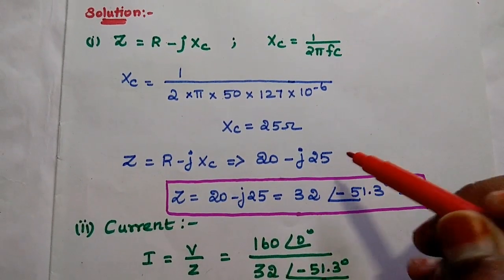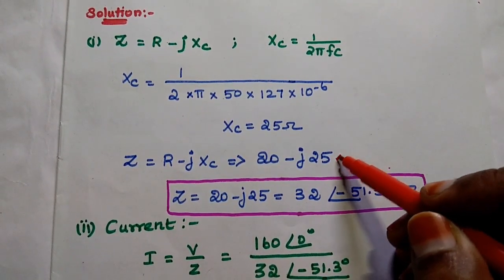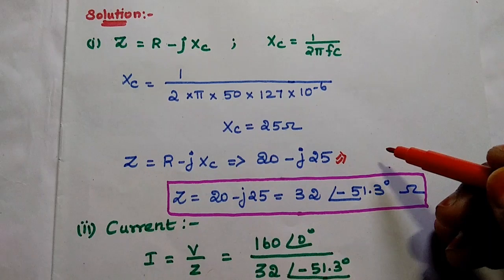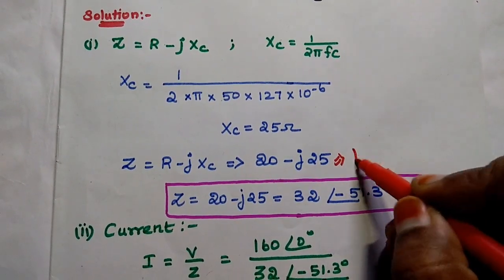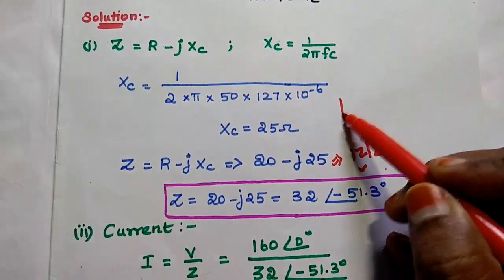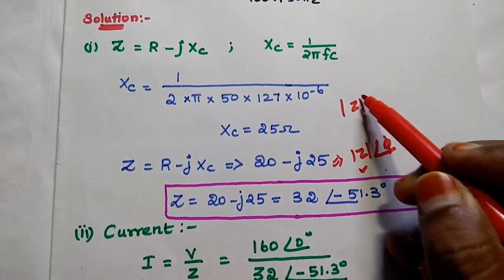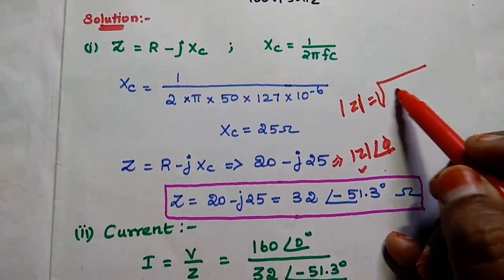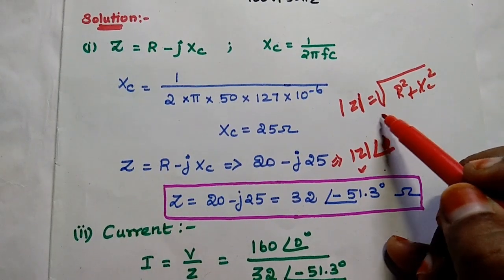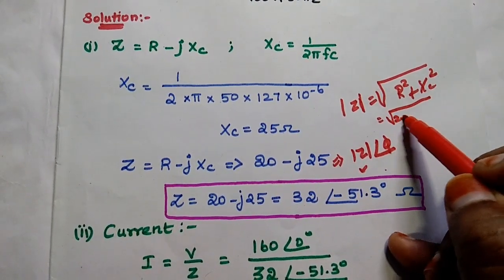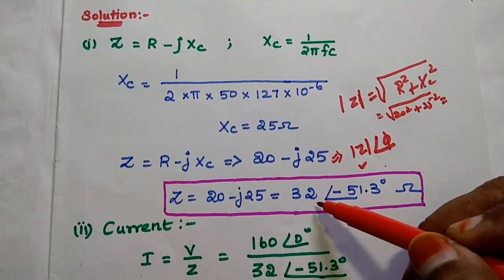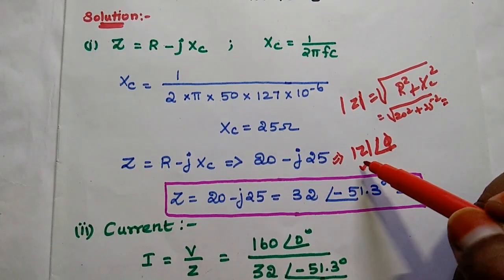The impedance is in complex form — real and imaginary terms. We need to convert this complex form into polar form. Polar form gives the magnitude along with the phase. The magnitude is: modulus of Z equals the square root of the real part squared plus the imaginary part squared — that is, square root of 20 squared plus 25 squared — giving 32 ohm.